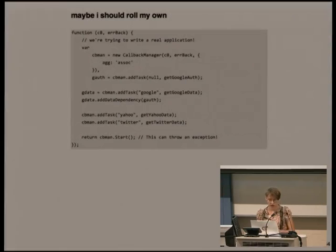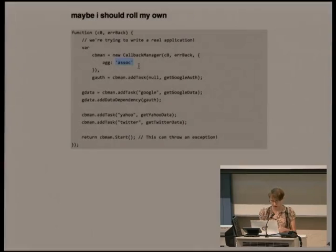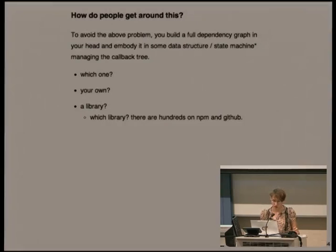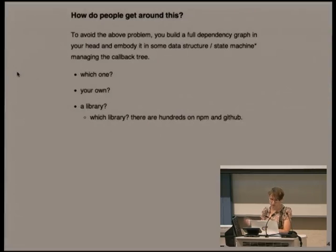So every single Node.js programmer writes their own little library, like a callback manager. You add tasks, some with dependencies on other tasks, specify how to aggregate the data, and tell it to start — it will eventually call your final callback. There are thousands of these libraries and every project is using a different one. To figure out complexity like this, you basically have to figure out a dependency graph of everything you want to do in your own head, embed it in a data structure, pick one of those libraries, and still hope you get it right.